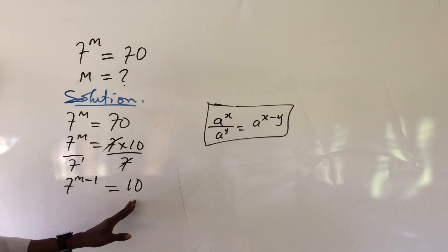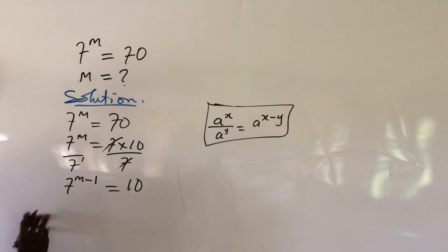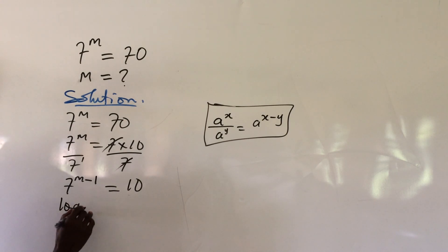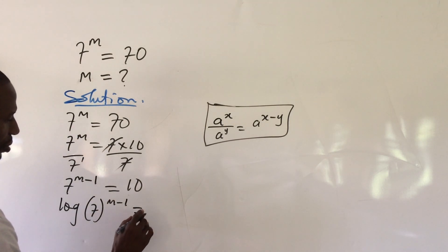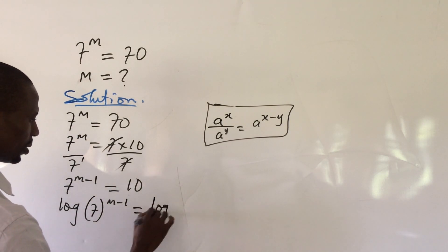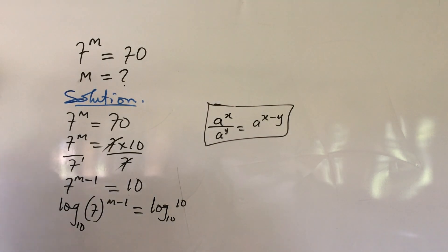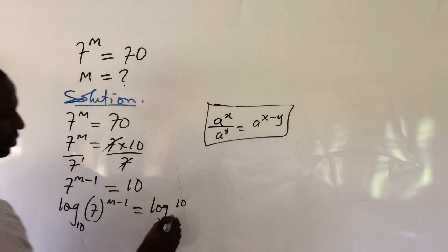Now, at this point, we can take log base 10 of both sides. If we take log to base 10, we're going to have this to be log of 7 to the m minus 1 equal to log 10. So let's move from here.